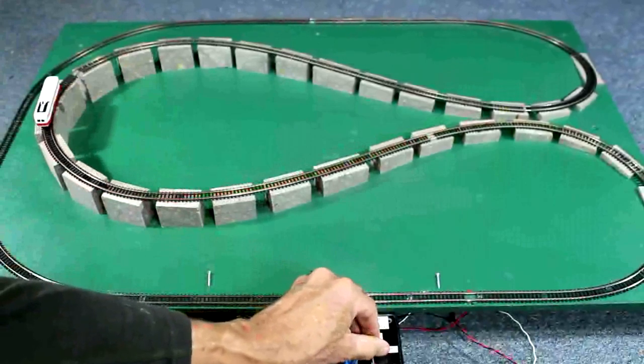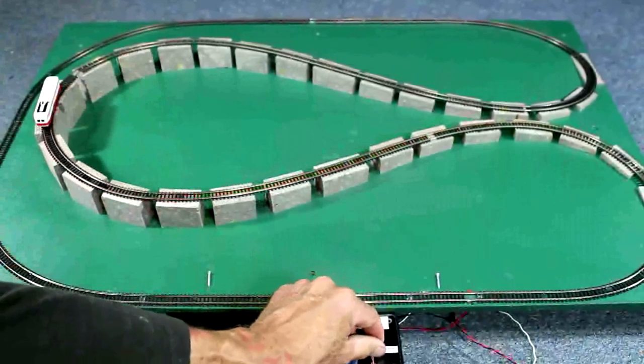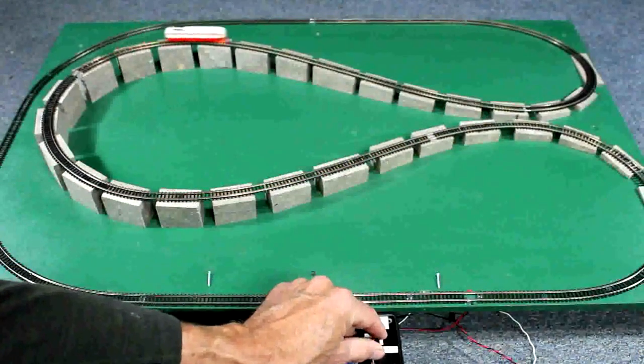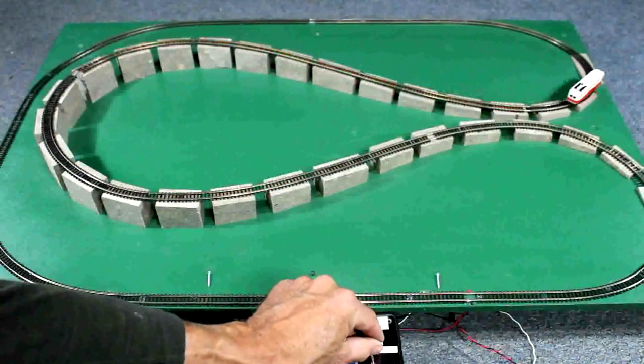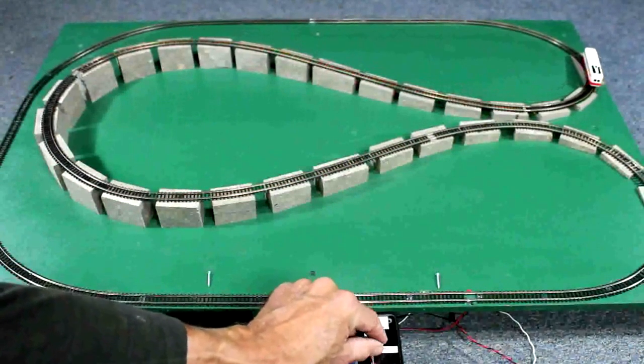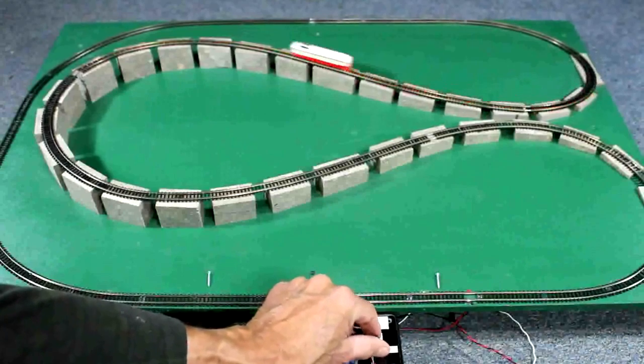As it approaches the top of the hill I'll slow it down and stop it. Notice it's right in the middle of the top of the hill. I'll bring it to the bottom of the hill and stop it right about there. Let's back it up once and bring it the whole way around.